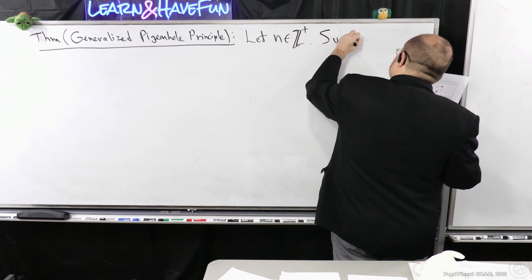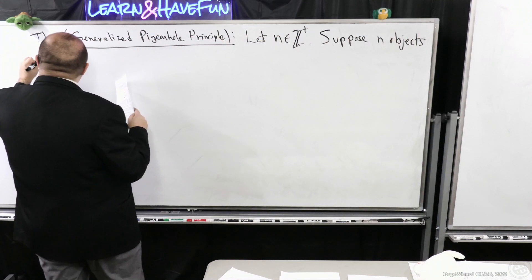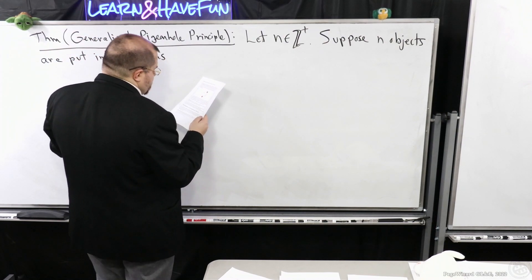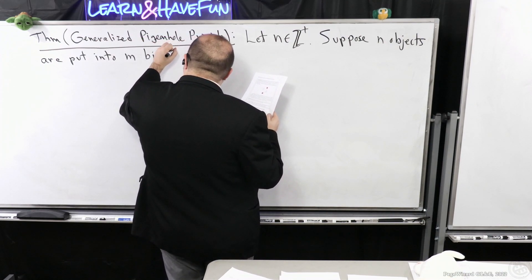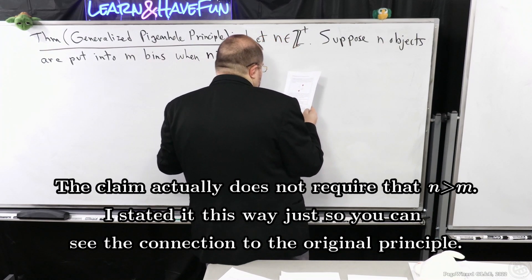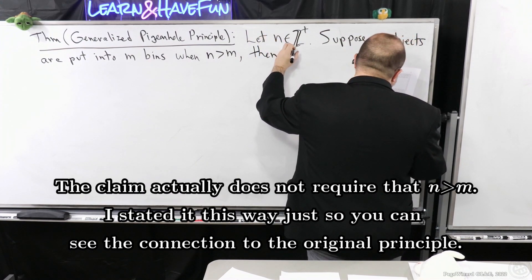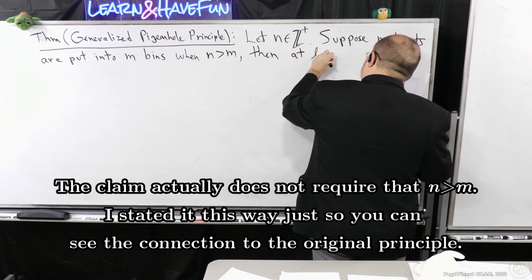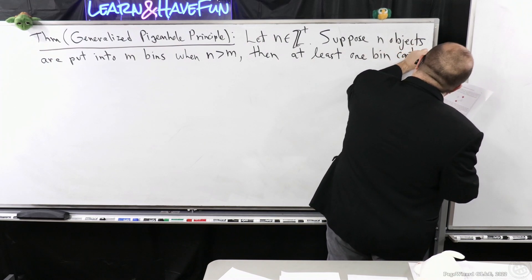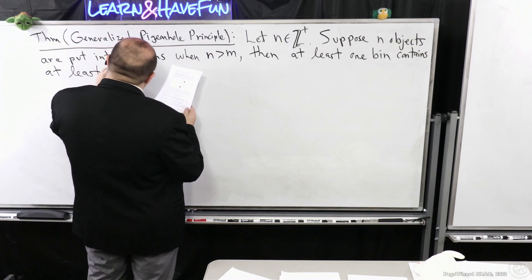So suppose n objects are put into m bins, and I must stress that it's the case that n is strictly bigger than m, then at least one bin contains at least the floor of n minus one over m plus one.